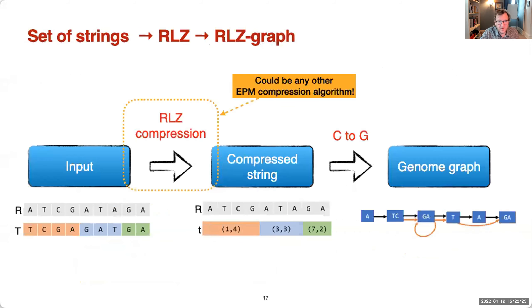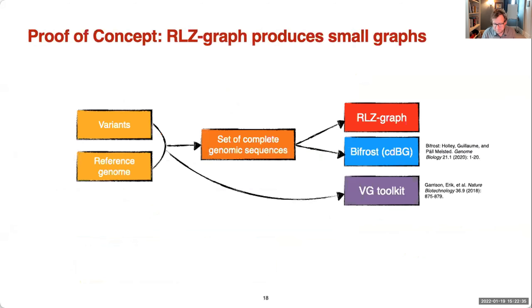We implemented this idea — using relative Lempel-Ziv as our EPM method followed by the C-to-G conversion — in what we call RLZ graph. As a proof of concept, we conducted experiments. The idea is to take a collection of variants and a reference genome, use the variants to produce a set of complete genomic sequences, then run RLZ graph. The input to RLZ graph is complete genomic sequences rather than variant calls directly.